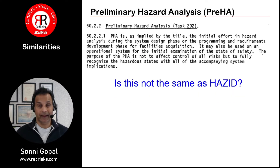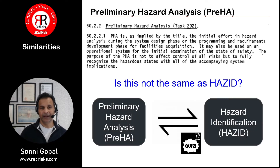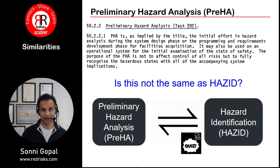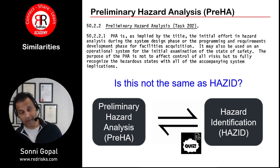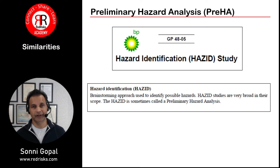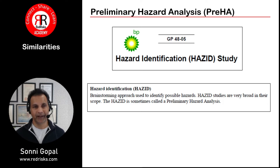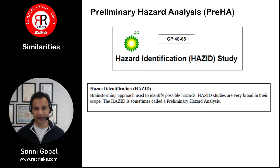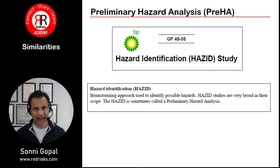Is this not the same as a hazard? Yes, it is. A Pre-HA is essentially a hazard identification process. My background is BP, and in BP we have a procedure — GP48-05 on hazard identification. It says the hazard is sometimes called a Preliminary Hazard Analysis. And if you look at the Shell DEPs, it also says the same thing, and also Mobil Exxon, because a hazard in effect is a high-level view.